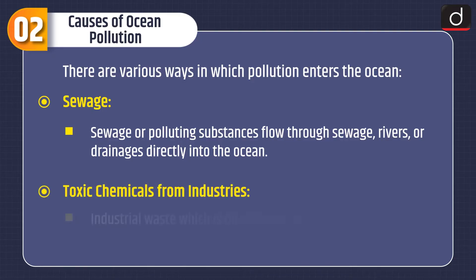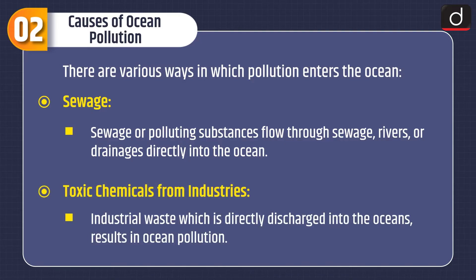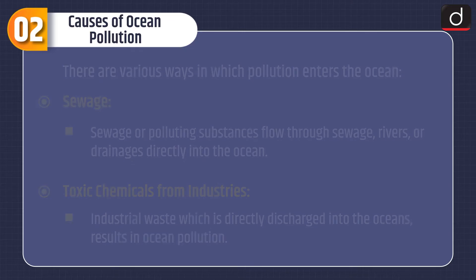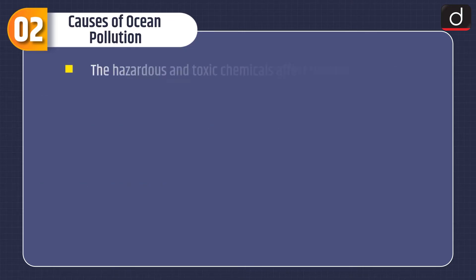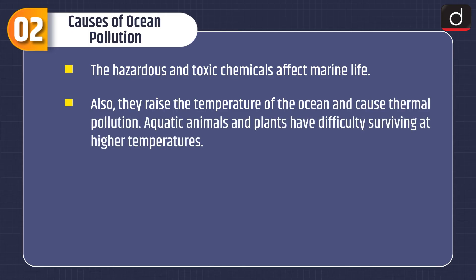Next is toxic chemicals from industries. Industrial waste which is directly discharged into the oceans results in ocean pollution. The hazardous and toxic chemicals affect marine life. They also raise the temperature of the ocean and cause thermal pollution. Aquatic animals and plants have difficulty surviving at higher temperatures.